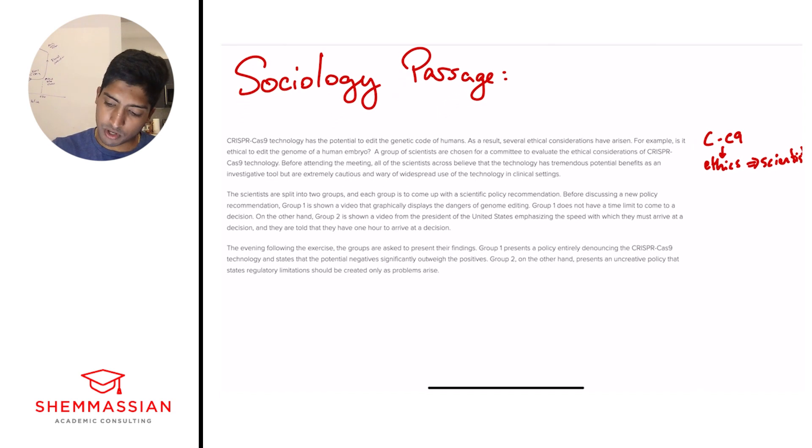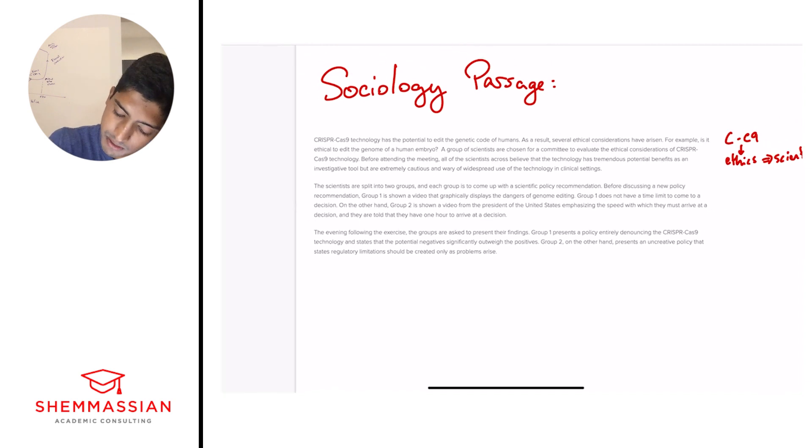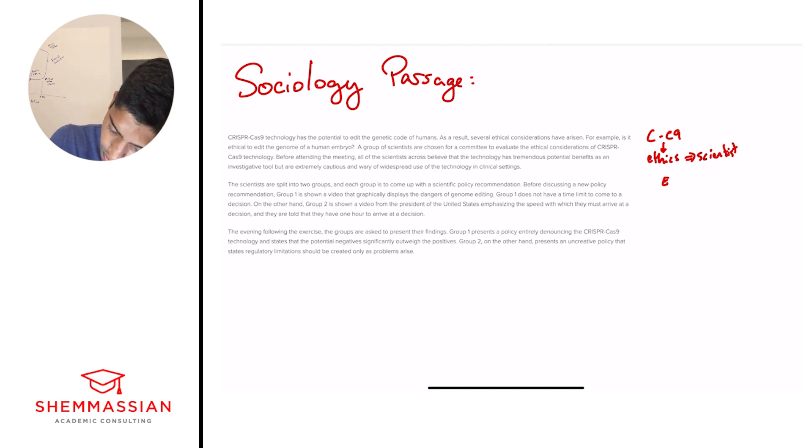Alright, so now we'll go on to paragraph two. The scientists are split into two groups, and each group is to come up with a scientific policy recommendation. Before discussing a new policy recommendation, group one is shown a video that graphically displays the dangers of genome editing. Group one does not have a time limit to come to a decision. On the other hand, group two is shown a video from the president of the United States emphasizing the speed with which they must arrive at a decision, and they are told they have one hour to arrive at a decision. So here, we have an experimental setup. Experiment group one and group two. One, infinite time. Two, limited time, increased pressure. Something quick, simple, nothing too crazy.